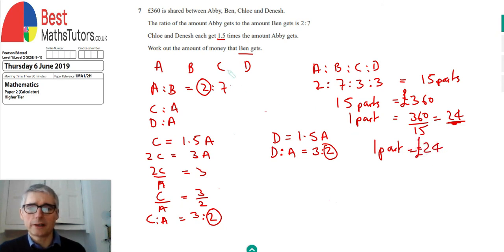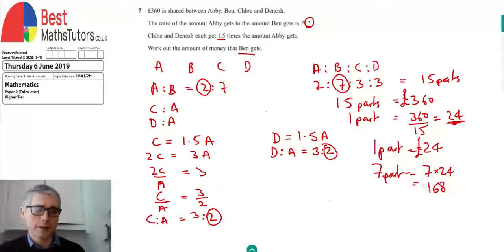So if one part is equal to 24 pounds, then what we're being asked to do is find what Ben is going to get. And because Ben is the 7 in this ratio, then we need to find out what 7 parts is worth. So 7 parts is just 7 times 24. And that is 168 pounds.